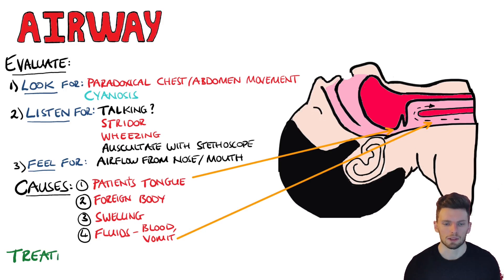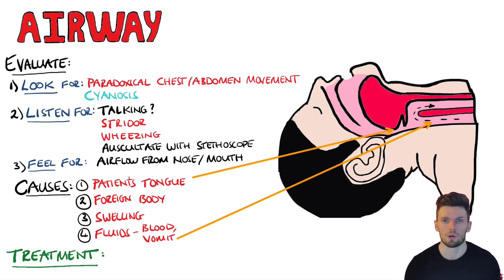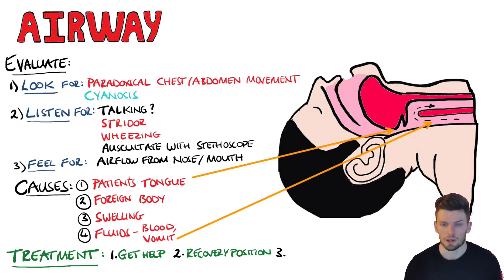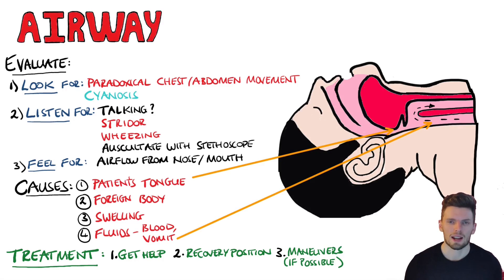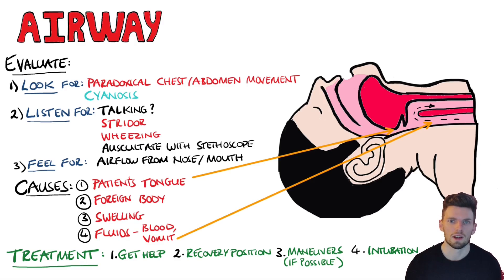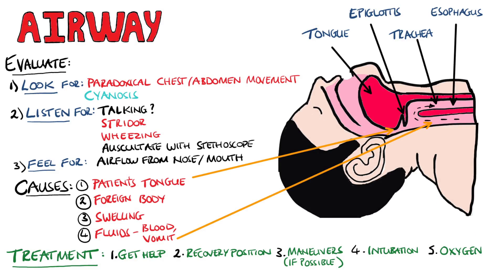If the airway is obstructed, the patient can rapidly deteriorate and die, or suffer hypoxic damage to organs such as the brain and heart. The first thing you do is get help. Depending on the cause, the patient may be moved into the recovery position. You may perform manoeuvres like back slaps or abdominal thrusts to dislodge a foreign body. Devices can be used to prevent the tongue from obstructing the epiglottis, or you can intubate the patient. Oxygen is also usually given.